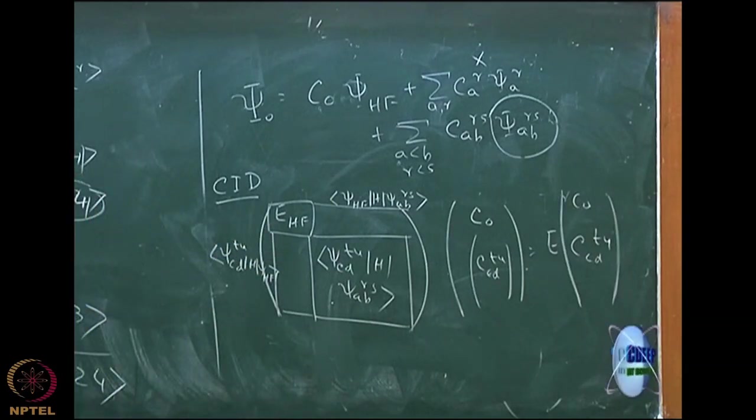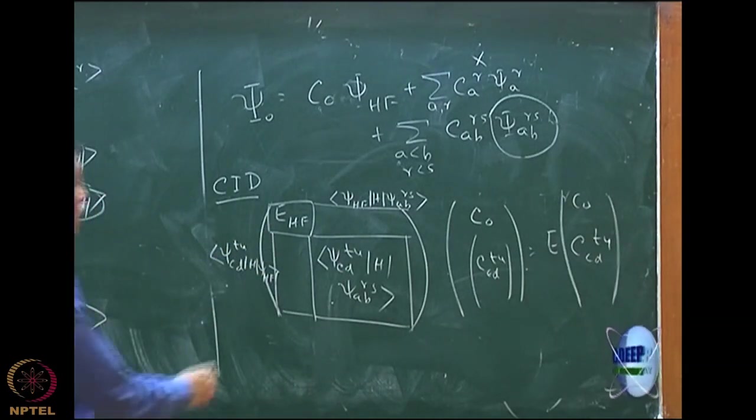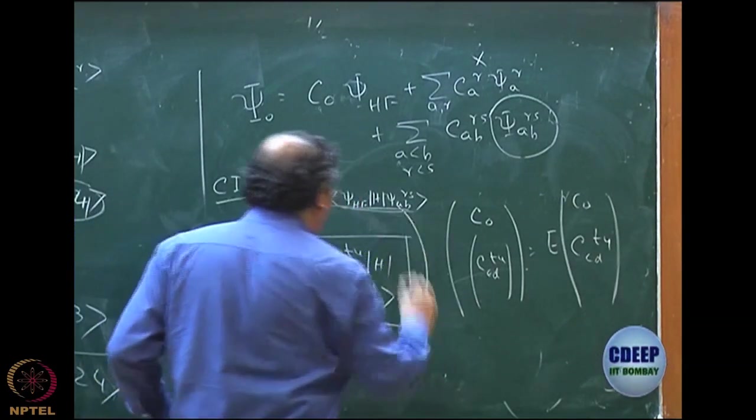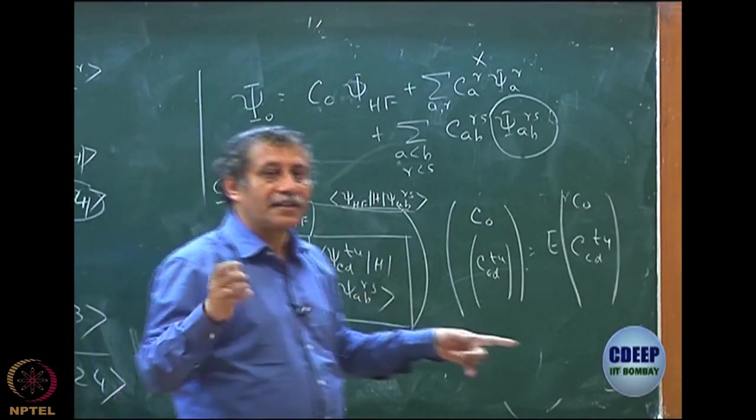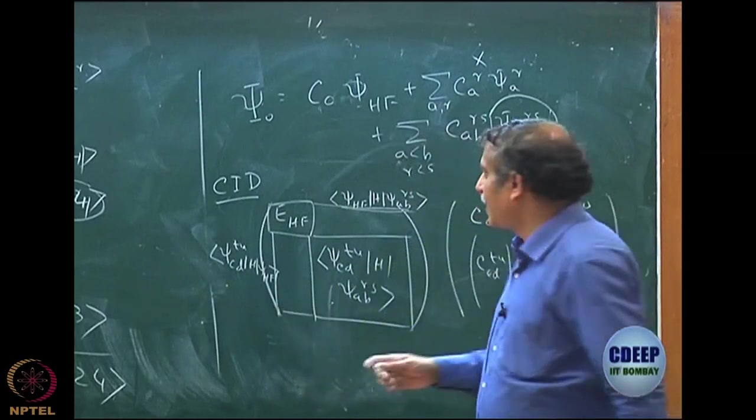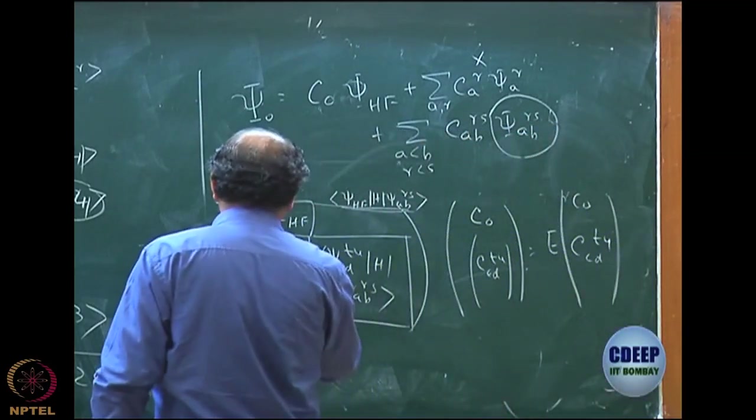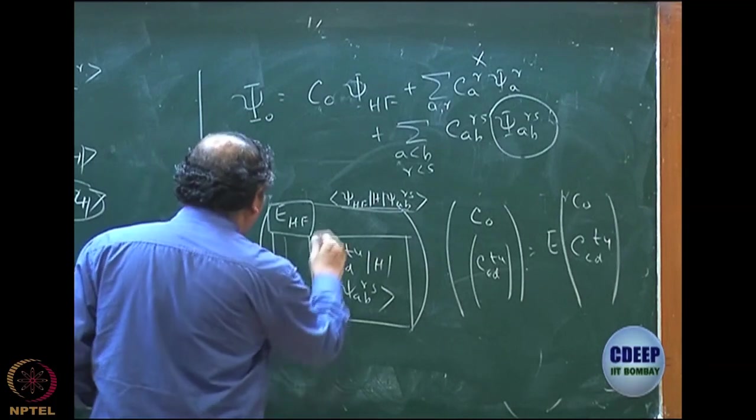That is an eigenvalue equation in general. Now you see this is no longer zero, because there is no Brillouin's theorem for this. In fact, these integrals are nothing but AB RS, AB antisymmetrized RS, and this is RS CD antisymmetrized or TU antisymmetrized CDTU. These values will all be there.